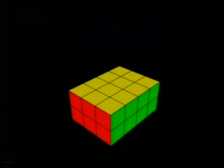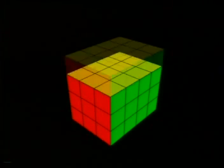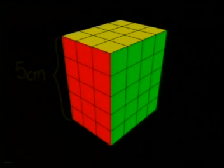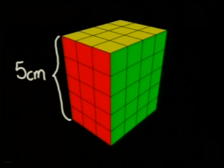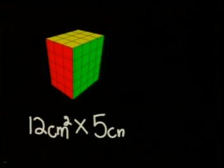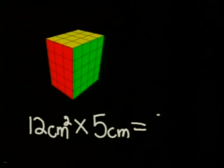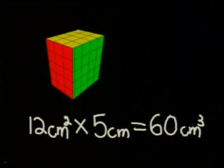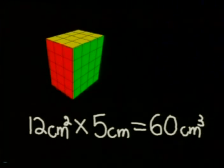Now we stack identical layers of cubes on top of this base until we have our structure 5 layers high. Since we know that the area of the base is 12 centimeters squared, and we have 5 layers in total of area 12 centimeters squared, the quickest thing to do would be to multiply 12 centimeters squared by 5 centimeters. This gives us 60 centimeters cubed, or 60 cubic centimeters.